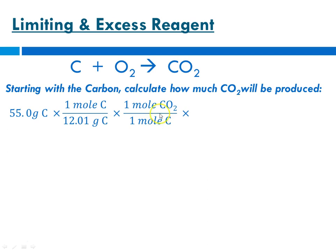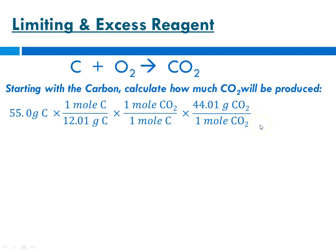Now we're ready to go from moles of carbon dioxide to grams of carbon dioxide, which means we use molar mass — 44.01 grams per mole for carbon dioxide. Grams of carbon cancels out, moles of carbon cancels out, and moles of carbon dioxide cancels out, leaving us with grams of carbon dioxide. Plugging into the calculator: 55.0 ÷ 12.01 × 1 × 44.01 gives us 201.5 grams of carbon dioxide.